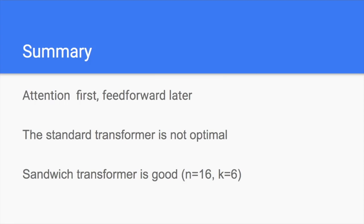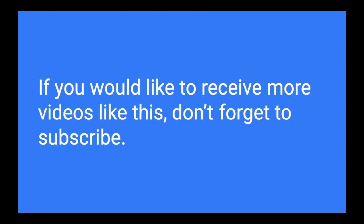To summarize: attention first, feed-forward later — if you want to redesign the transformer for NLP tasks. This may also apply to other domains like computer vision, but more experiments are needed. The standard transformer is not optimal; some variants can significantly outperform it, and the sandwich transformer is quite competitive — especially with sandwich coefficient K=6 on a 16-layer BERT model. If you enjoyed the video, give it a like and subscribe for more deep learning content.